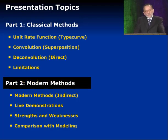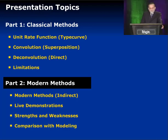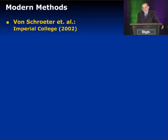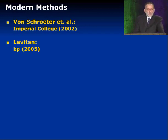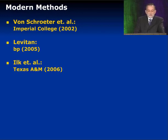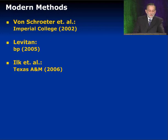Hopefully the modern methods will get around that problem, and they do to some extent. The modern methods were introduced in 2002 by Thomas von Schroeter, a PhD student at Imperial College in London. A few years later, Leviton with BP extended this method, and after that, Ilk et al. at Texas A&M also extrapolated the method using slightly different ways of getting the information. I'm going to review the three methods briefly, and then we'll combine them all into one generic method.